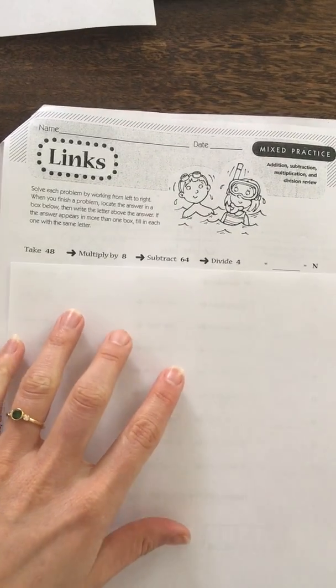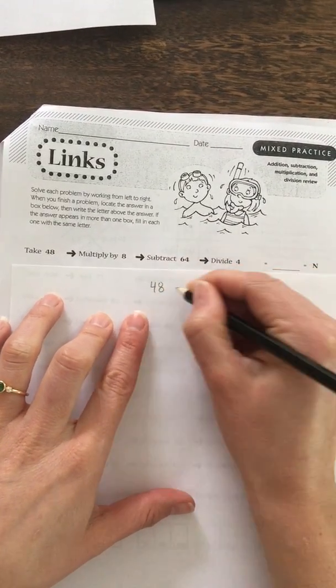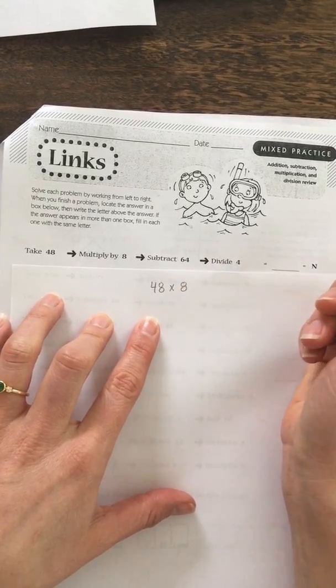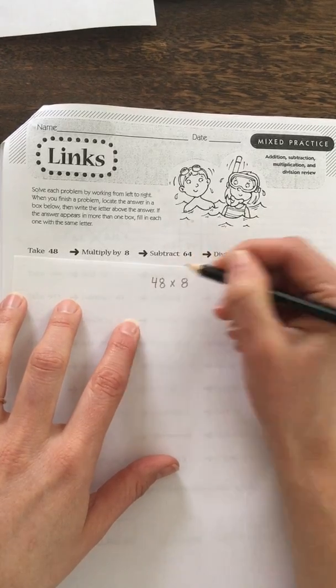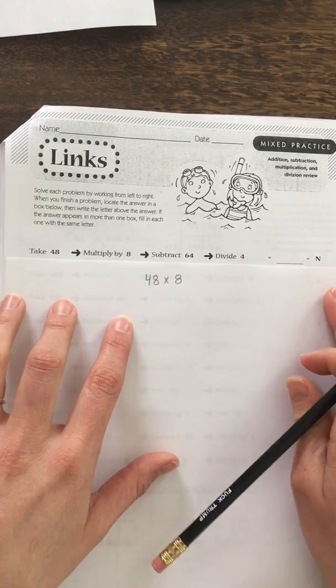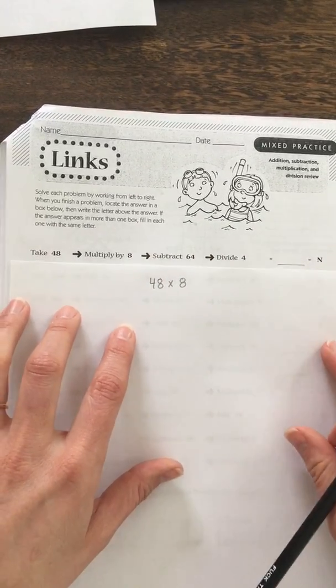Alright, so the first question says take 48, so I'll write down 48 and multiply by 8, 48 times 8. Then we're going to subtract 64 and divide by 4, but before we do, we write down this whole equation. I'm just going to do one step at a time. So 48 times 8, I'll use the area model.